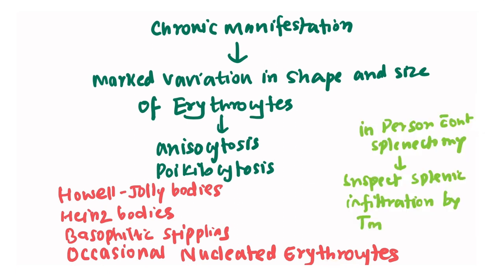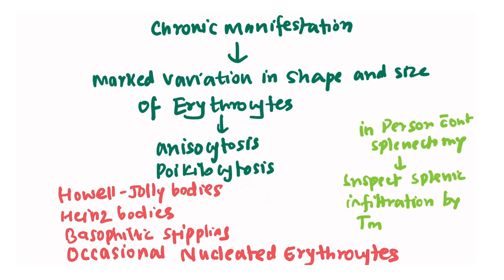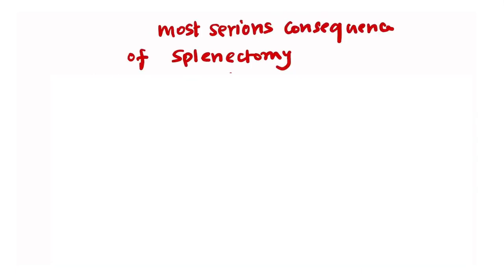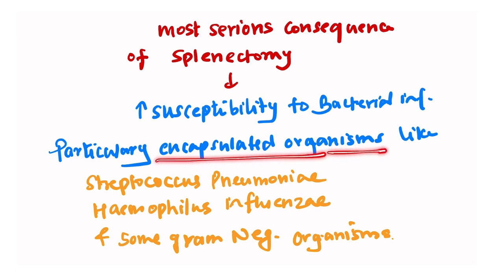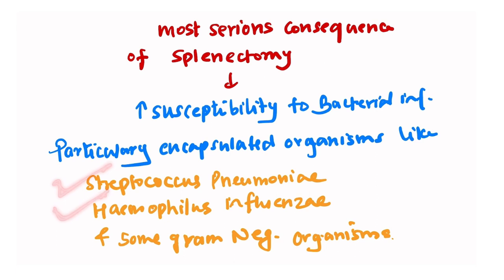It is important to note that if these findings are seen in a person who has not undergone splenectomy, we should suspect splenic infiltration by tumor. The most serious consequence of splenectomy is increased susceptibility to bacterial infections, particularly by encapsulated organisms like Streptococcus pneumoniae, Haemophilus influenzae, and some gram-negative organisms.